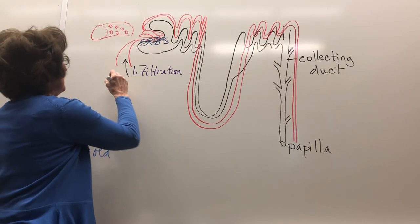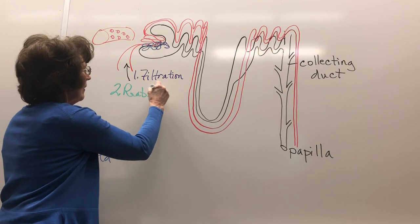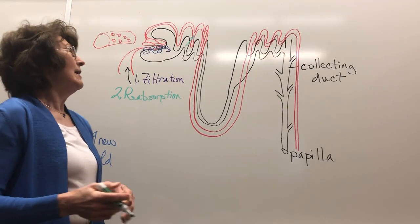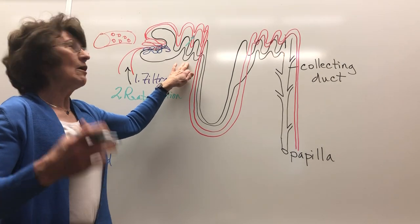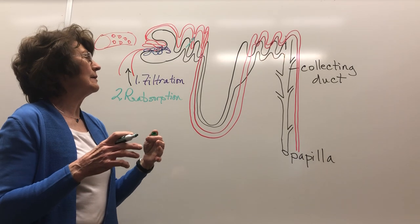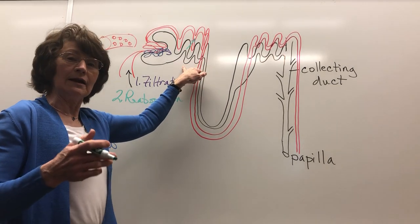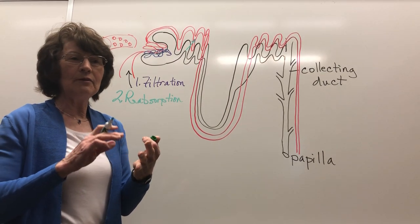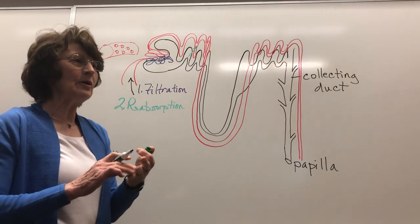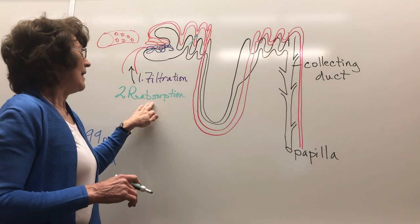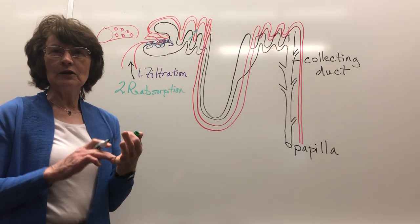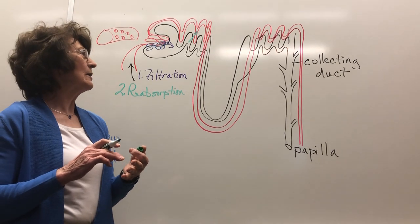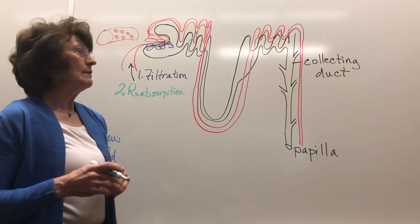Where is reabsorption? It's going back into the bloodstream. We can't lose 180 liters a day, so it's got to be reabsorbed. The proximal convoluted tubules have cuboidal cells with microvilli, which allow the reabsorption. The mechanisms are active transport, passive transport, and osmosis. Active transport requires ATP and mitochondria — that's where glucose is handled. 100% of glucose is normally actively transported. Sodium — 70% — is actively transported and reabsorbed back into the bloodstream, along with amino acids.